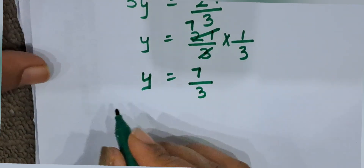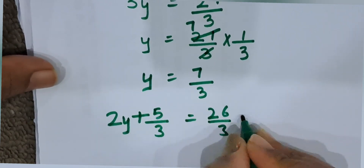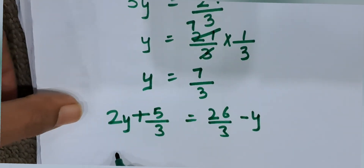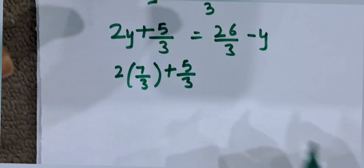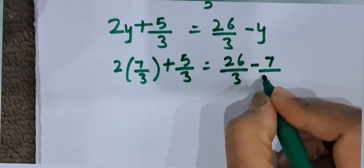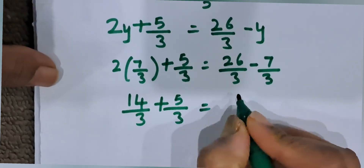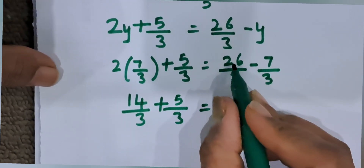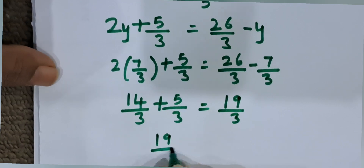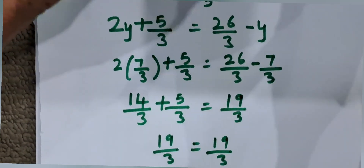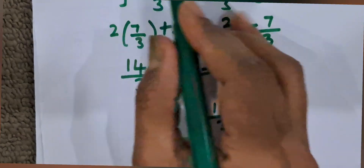Now, let us check the results. The question is 2y plus 5 by 3 is equal to 26 by 3 minus y. We put the value of y as 7 by 3. So, 2 into 7 by 3 plus 5 by 3 is equal to 26 by 3 minus 7 by 3. 2 sevens are 14, so 14 by 3 plus 5 by 3 equals 19 by 3. On the right: 26 minus 7 is 19, so 19 by 3. 19 by 3 is equal to 19 by 3. LHS and RHS are equal. So, y is equal to 7 by 3 is the correct answer.